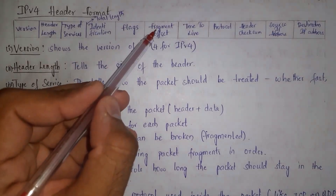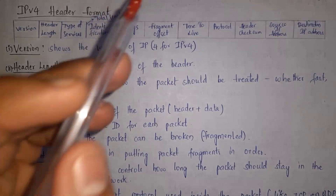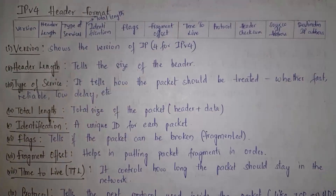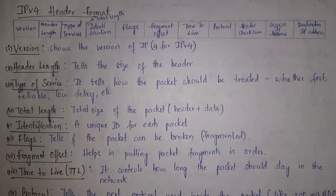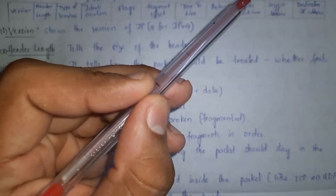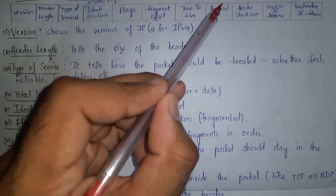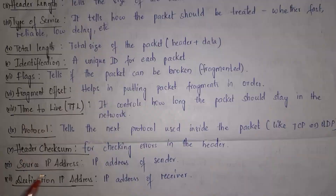The next field is fragment offset — whenever a complete packet is divided into pieces, all those pieces are arranged in order using the fragment offset. Next is time to live, which tells how much time a packet must remain in the network. Next is protocol, which tells what protocol is used in the packet — whether it uses TCP or UDP. Next is checksum, which is used to check errors in the data.